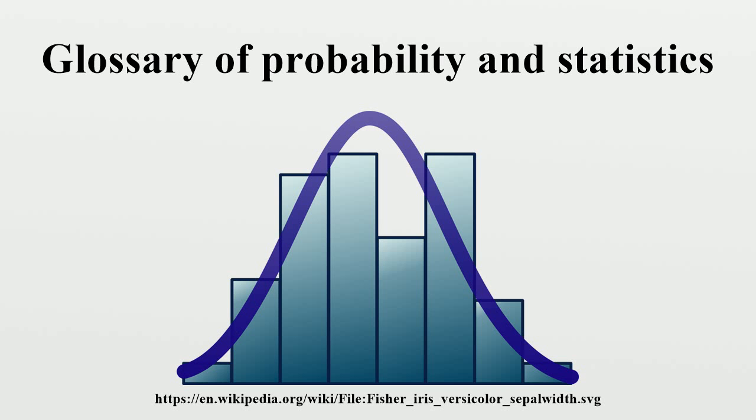Prior probability: in Bayesian inference, this represents prior beliefs or other information that is available before new data or observations are taken into account.